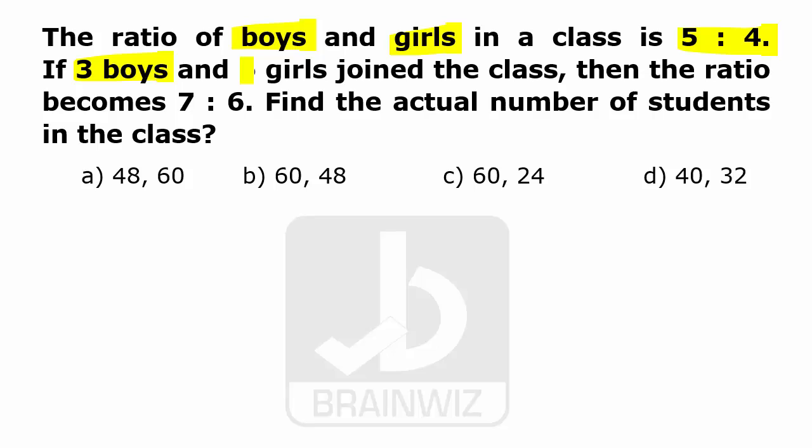Later on, three boys and six girls have joined the class and the ratio has become 7 is to 6. So we have to find out the actual number of students who were there in the class.